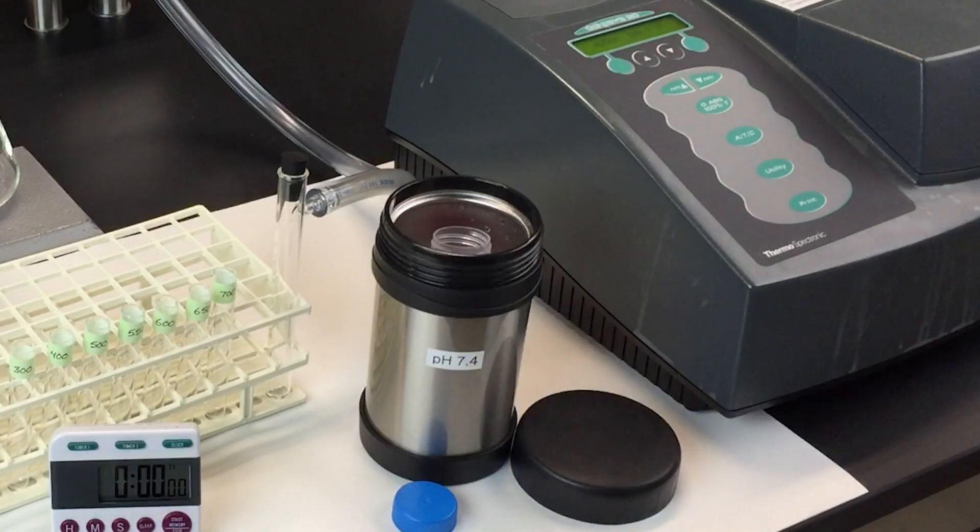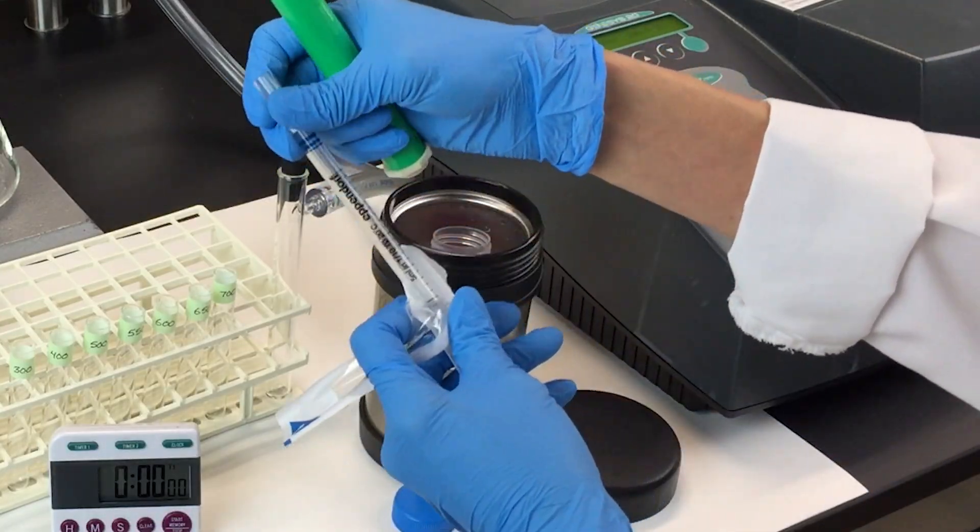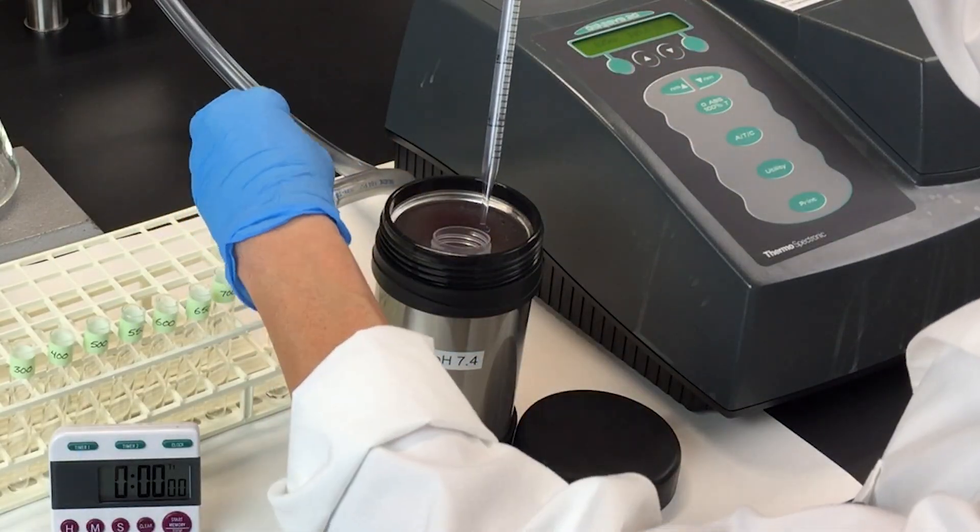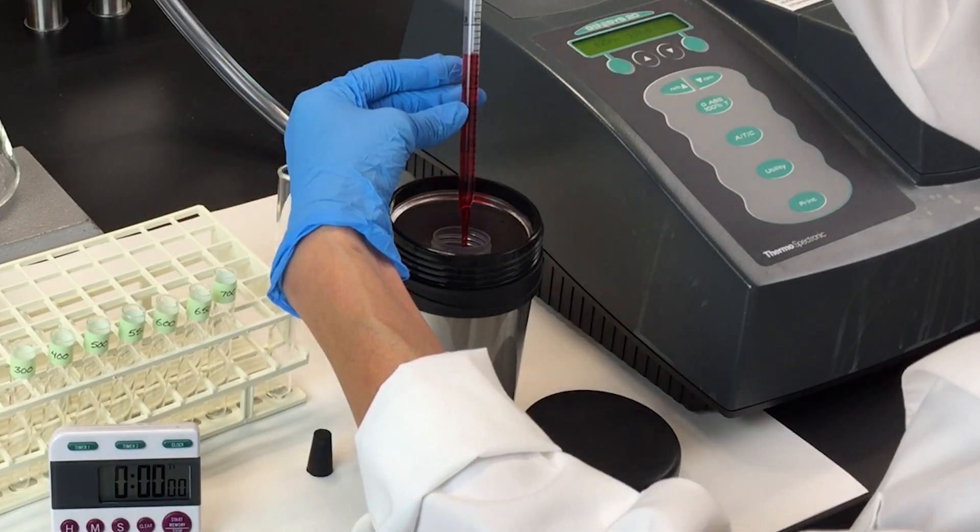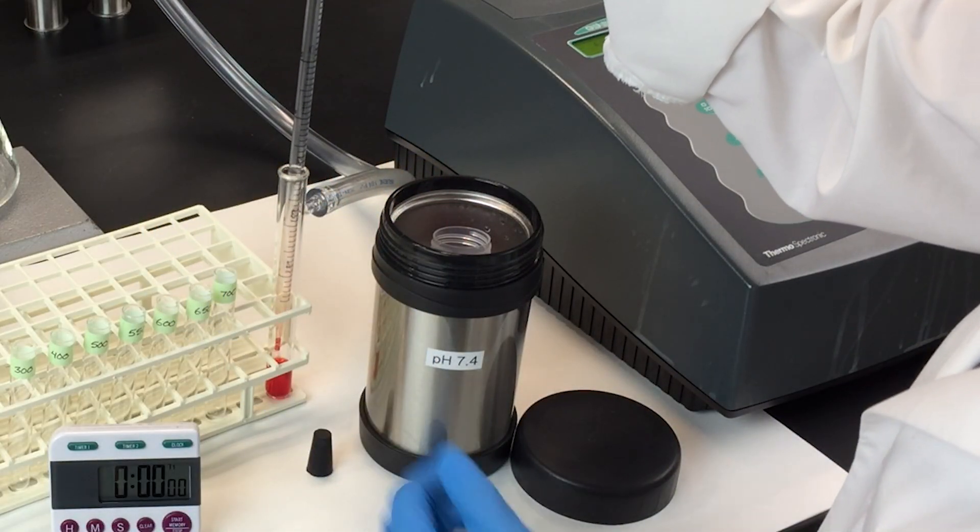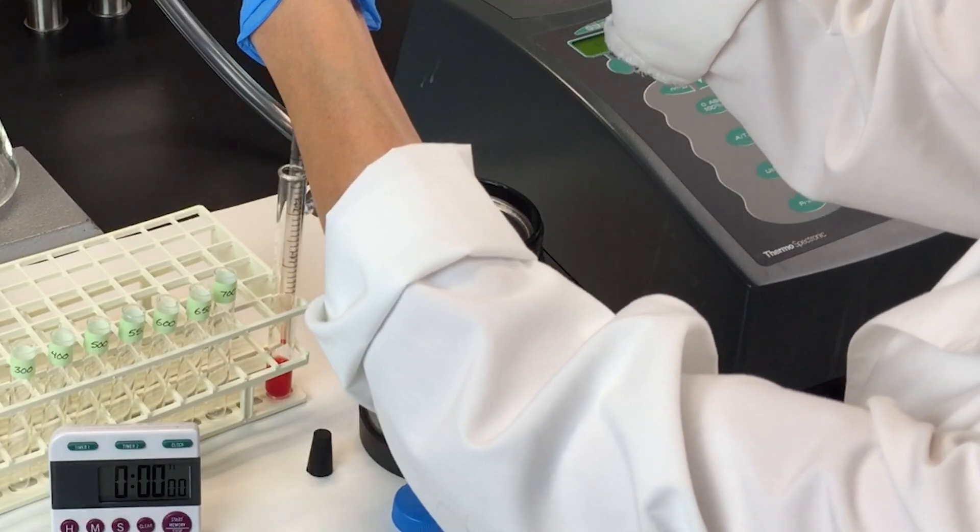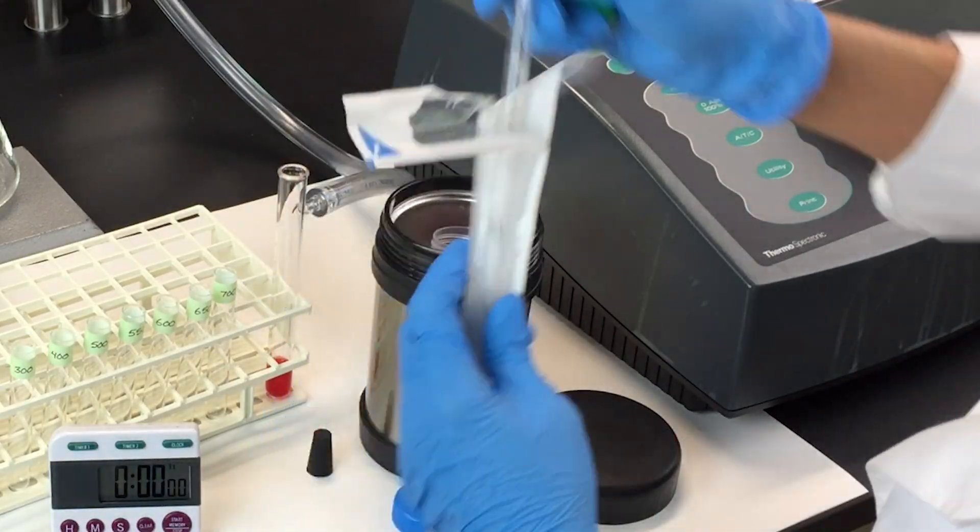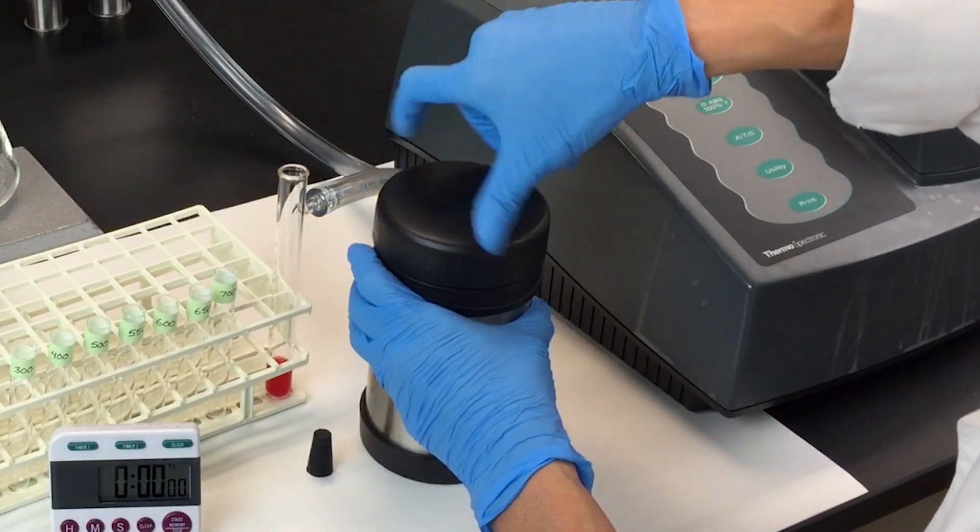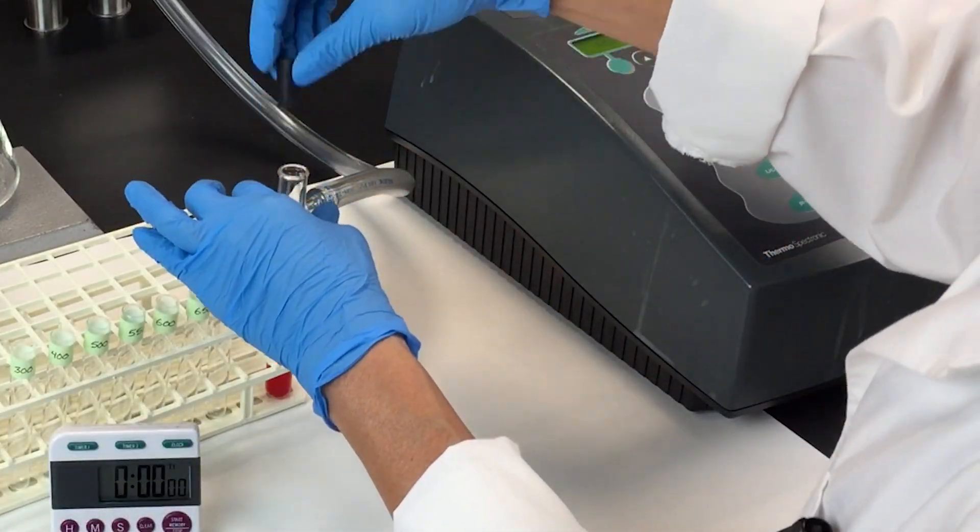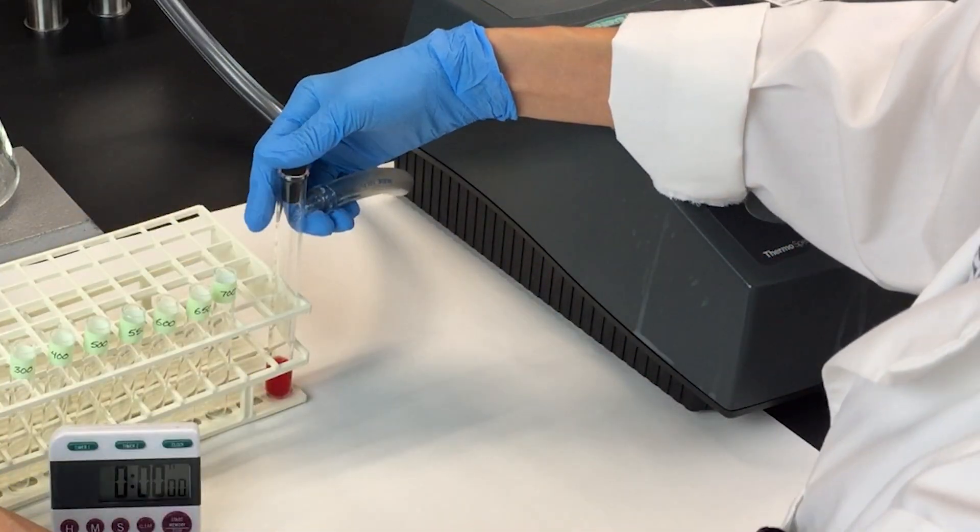Place 2.5 milliliters of hemolysate in the side arm tube that's attached to the vacuum system. Place the rubber stopper in the top of the tube to seal the system.